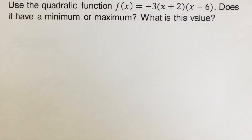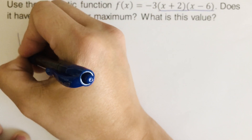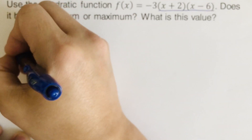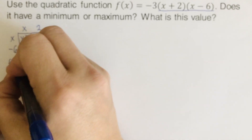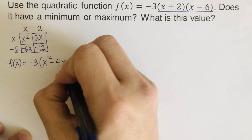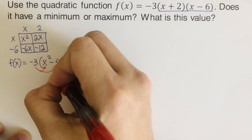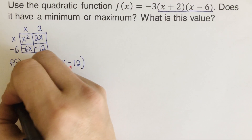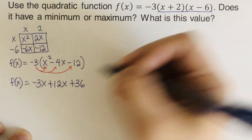Okay, so this one is not in standard form, so we're going to change it to standard form. To do that, we're going to use the area model. So we have x and 2x and negative 6, giving us: x squared, negative 6x, 2x, negative 12. So the function is f(x) = negative 3 times (x squared minus 4x) minus 12.